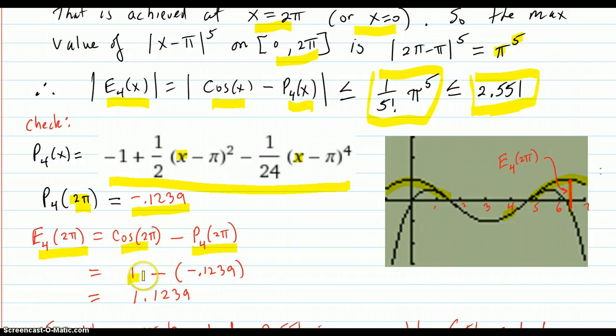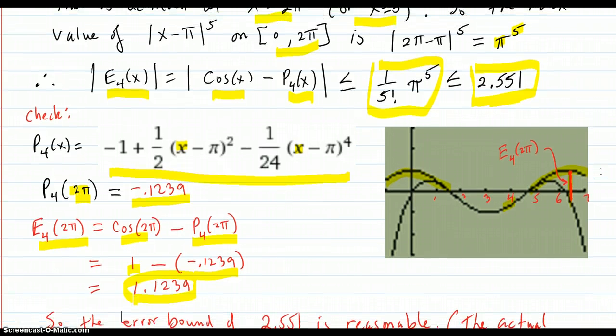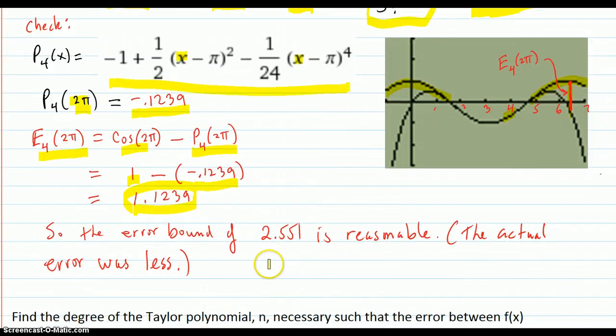The error at 2π between the function and the Taylor polynomial is 1, because cosine of 2π is 1, minus negative 0.1239, which gives 1.129. That's the actual error there. Our error bound was 2.551, so this error definitely is less than that number. The actual error turned out less, but that's okay.